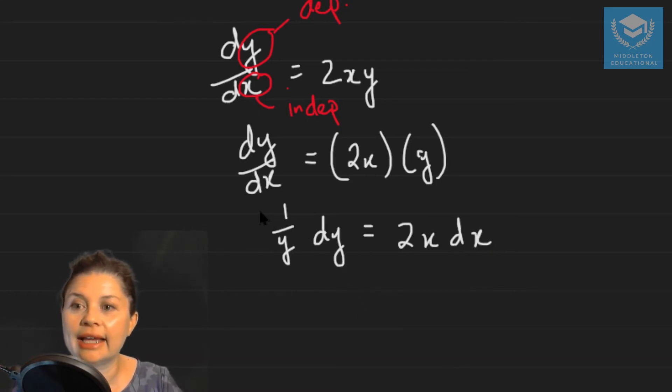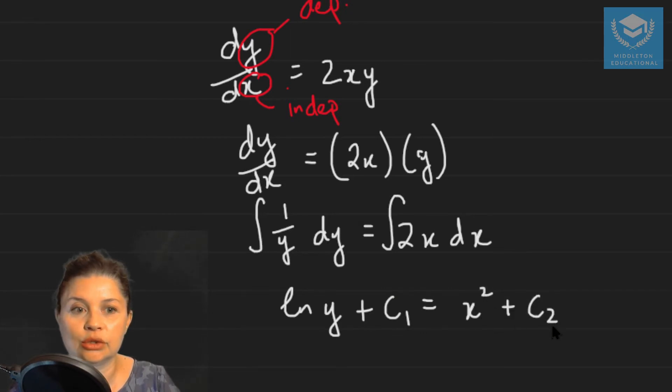And once I have that I can then integrate both sides of the equation. So during the integration I get ln y plus c1. That's going to be x squared plus c2.